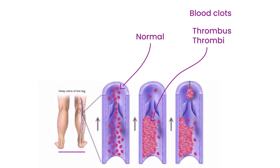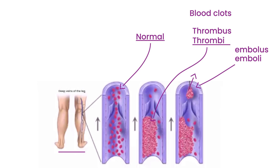What can happen is one of these can branch off and move up the circulation. Once a thrombus starts to move, it's known as an embolus (singular) or emboli (plural). The second scenario is really the DVT — deep venous thrombosis — because it's in the deep veins of the legs.